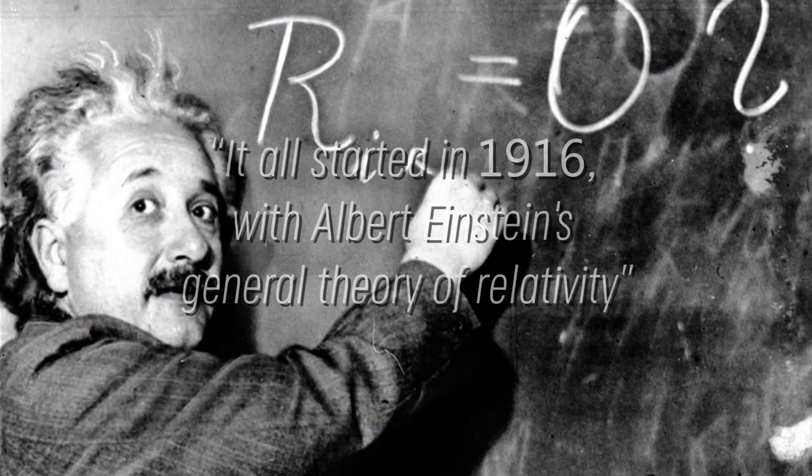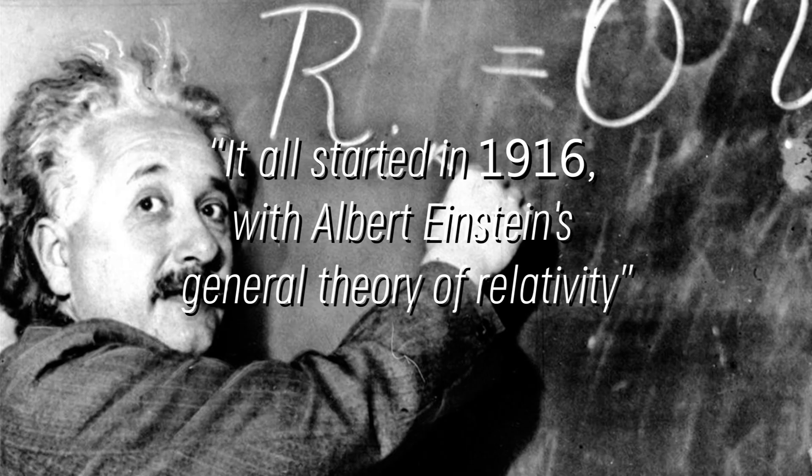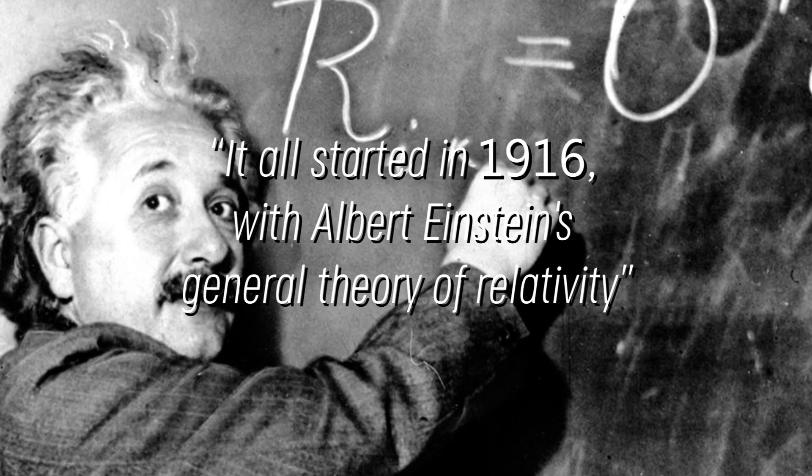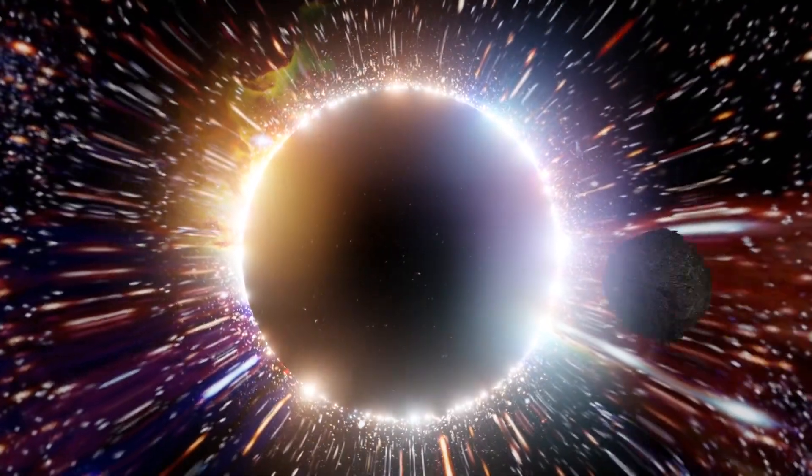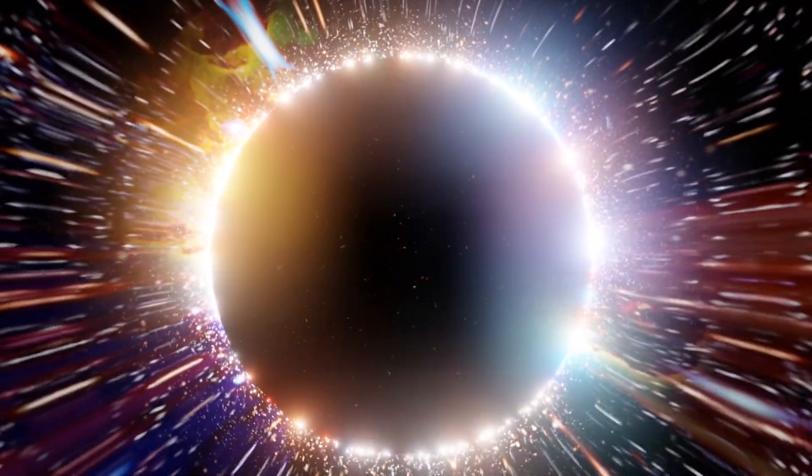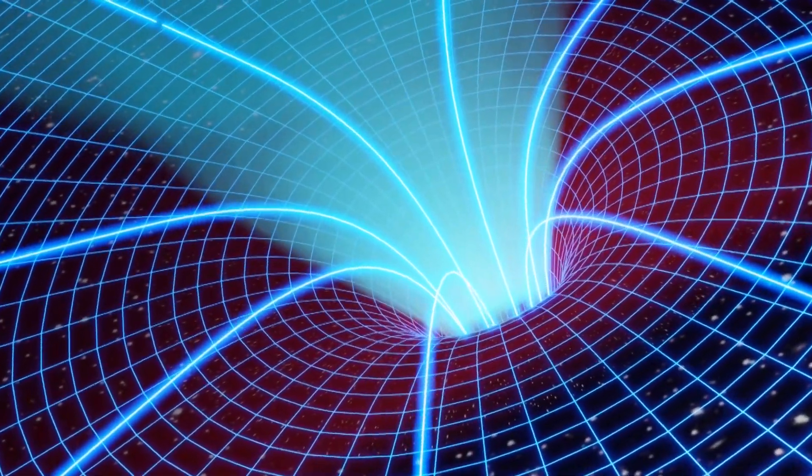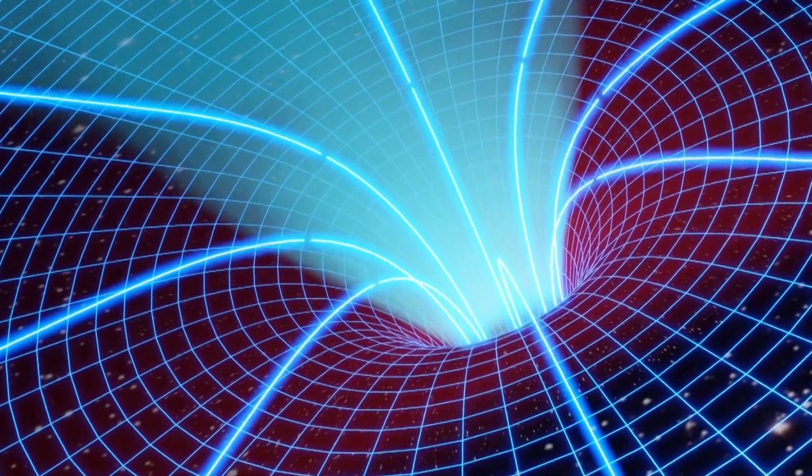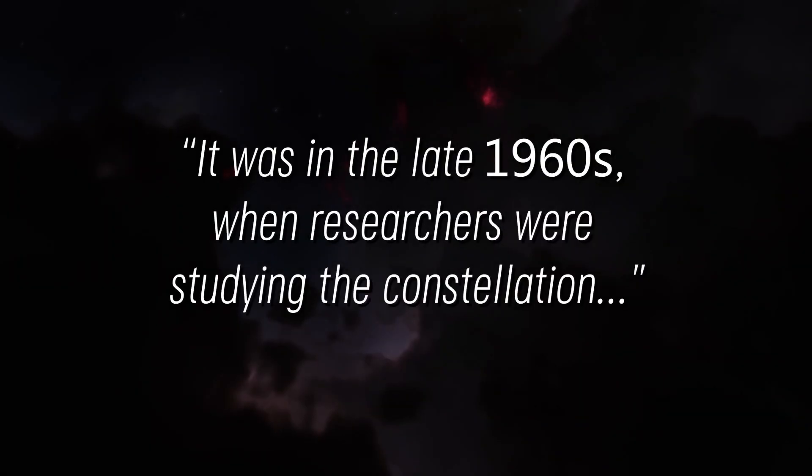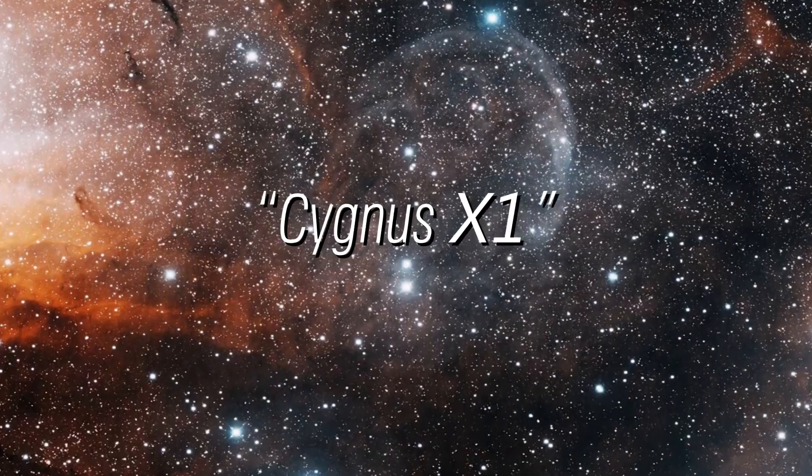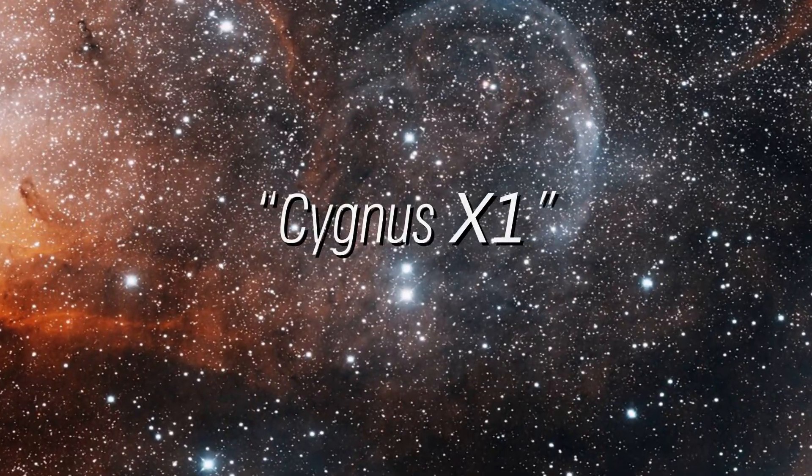It all started in 1916 with Albert Einstein's general theory of relativity, who was the first to predict the existence of these entities. Although the term black hole was officially coined 50 years later, some scientists already believed in Einstein's theory while others dismissed it. It was in the late 1960s when researchers were studying the constellation Cygnus X1 that they noticed something amazing.